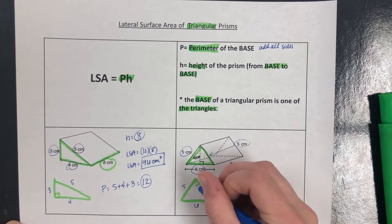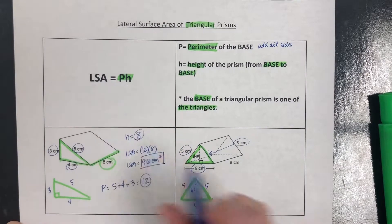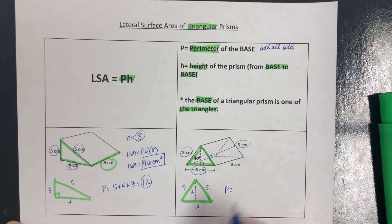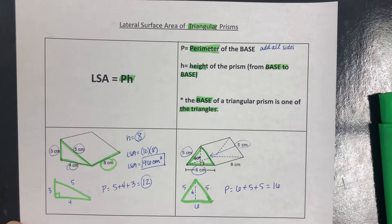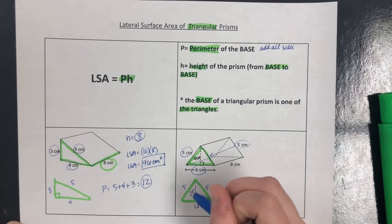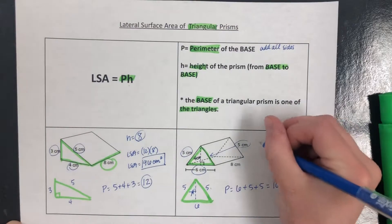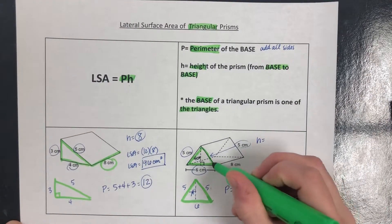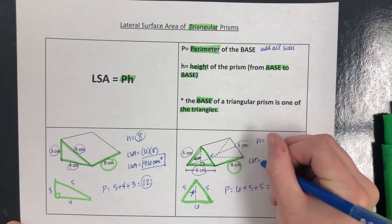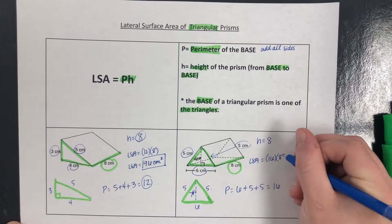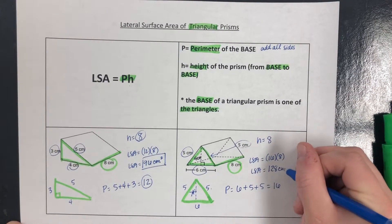It also gives us this dotted line — the height of the triangle. Now we plug in what we need. P, the perimeter of the base, means we add up all the sides: 6 plus 5 plus 5 gives us 16. Since we don't need the area of the base, the triangle height of 4 is not needed here. H, the height of the prism from base to base, is 8. So lateral surface area is 16 times 8 — plug that into your calculator and you get 128 centimeters squared.